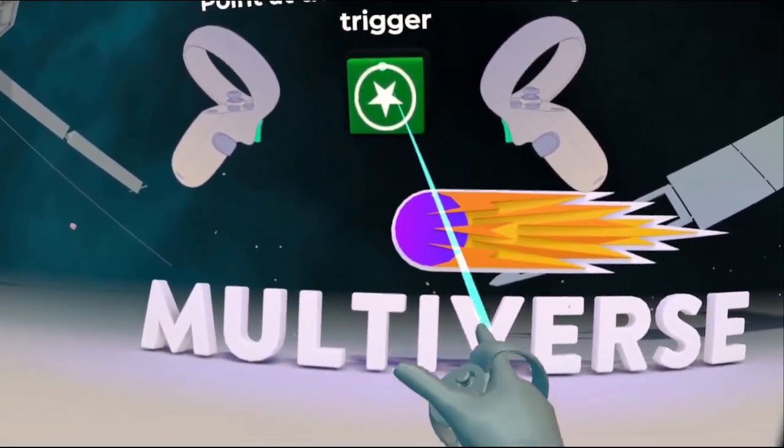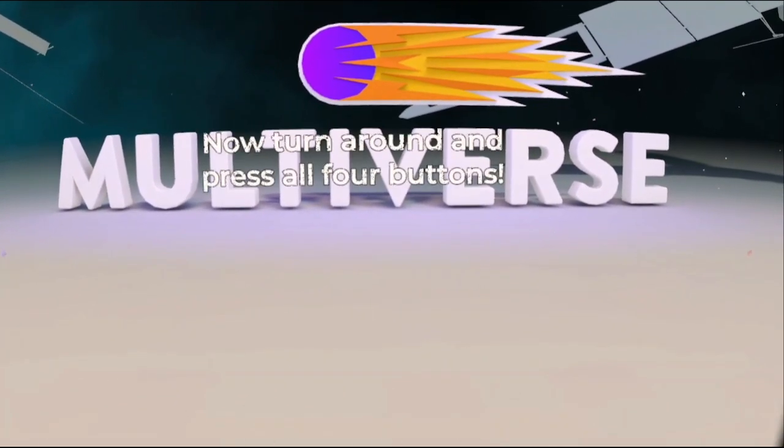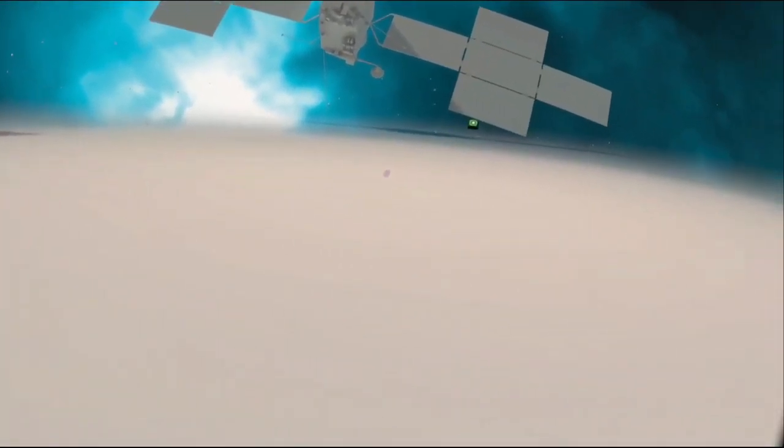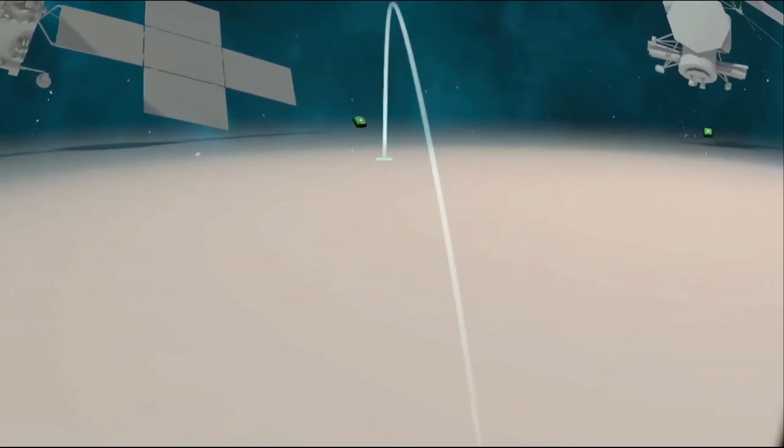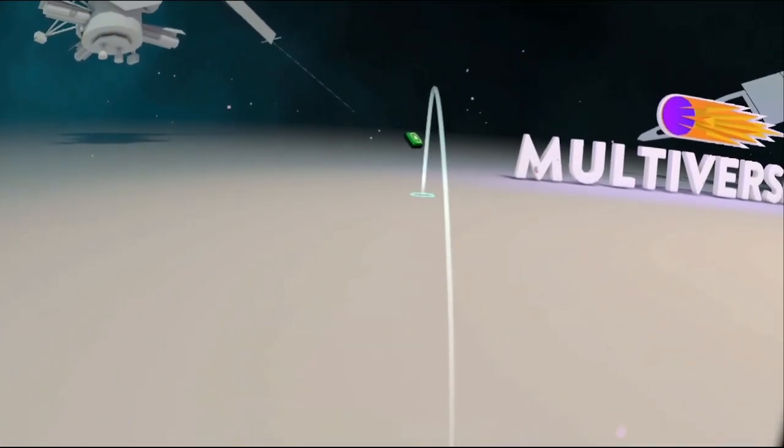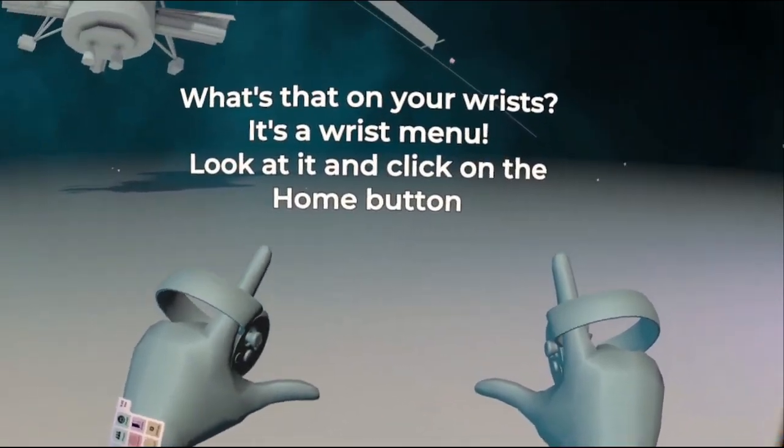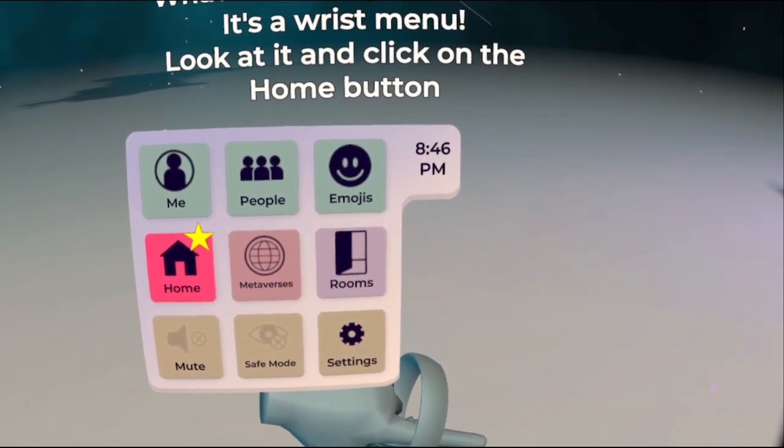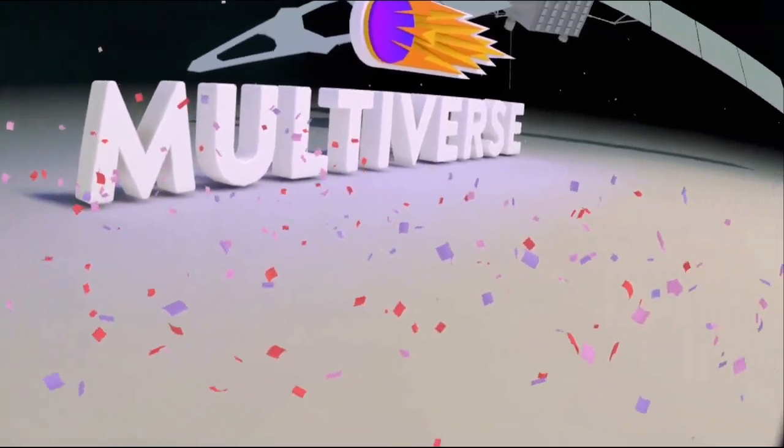You can also point at buttons. Point at this one and click the trigger. Amazing! Now turn around and press all four buttons. Alright. It's all pretty standard. Wow, almost there. Now hold up both your hands so that you can see them. What's that on your wrists? It's a wrist menu. Alright. Look at it and click on the home button. Home. Oh, yeah. That one.